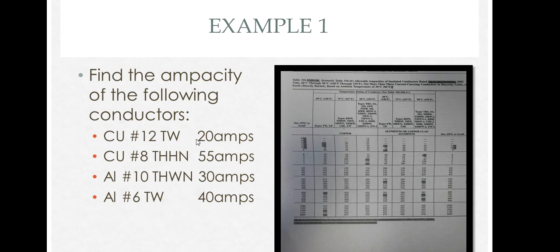In these examples, I'm only going to do one example. For copper number 12 TW, you go to the copper, you go to its size number 12, and the ampacity of a copper number 12 which has TW insulation is 20 amps.